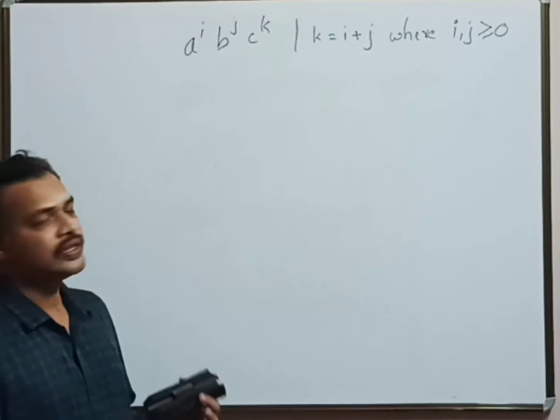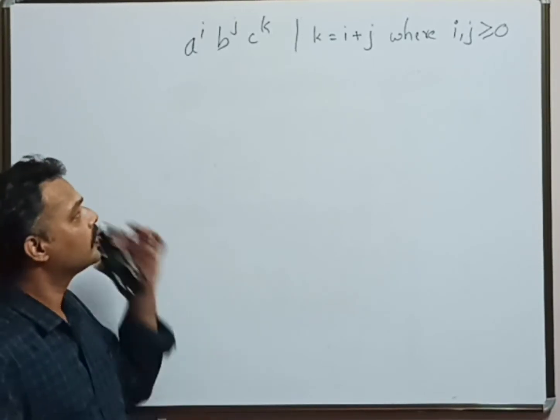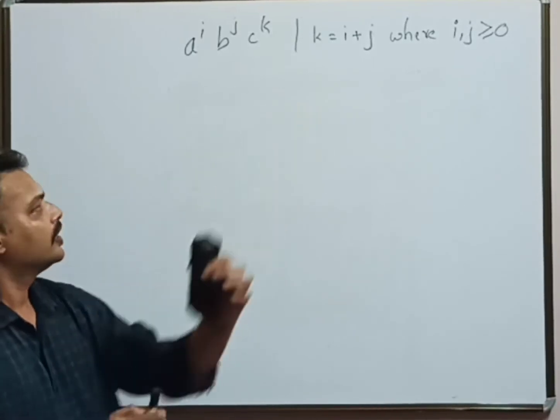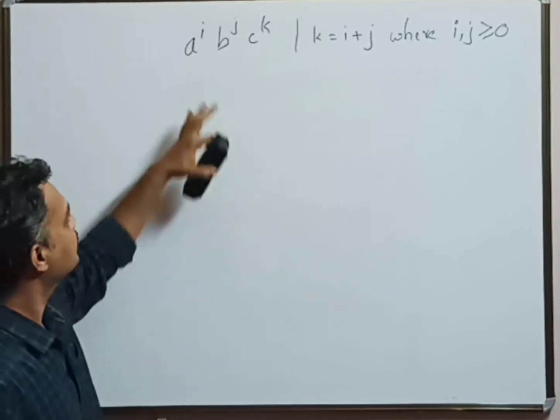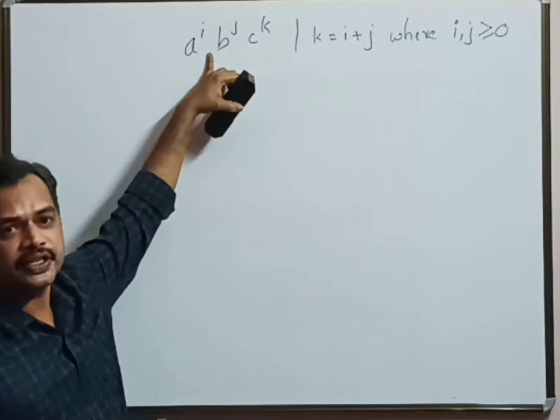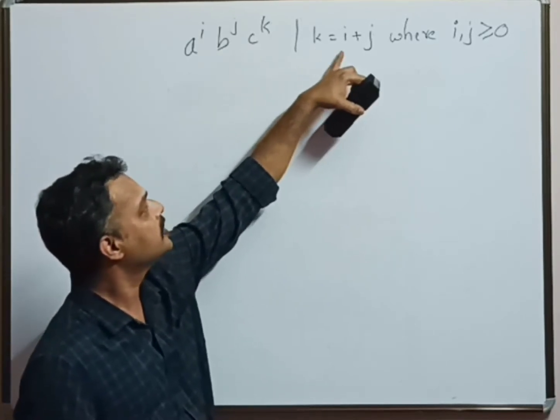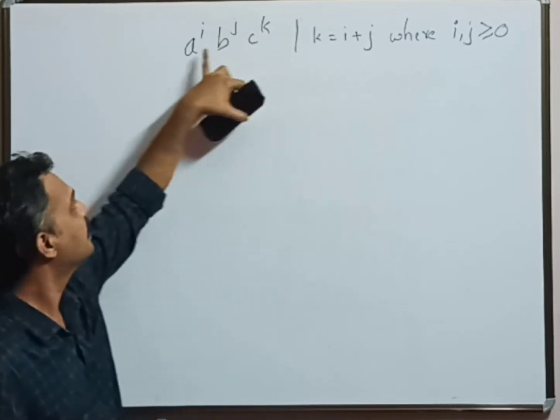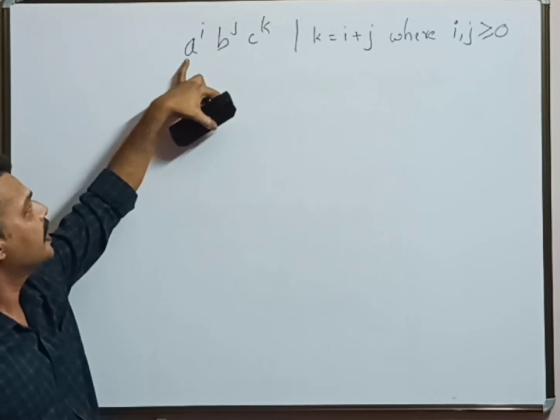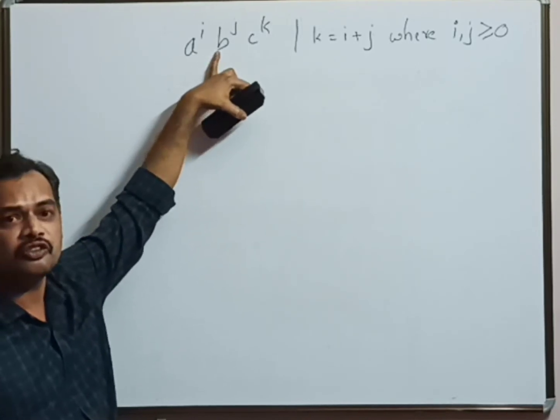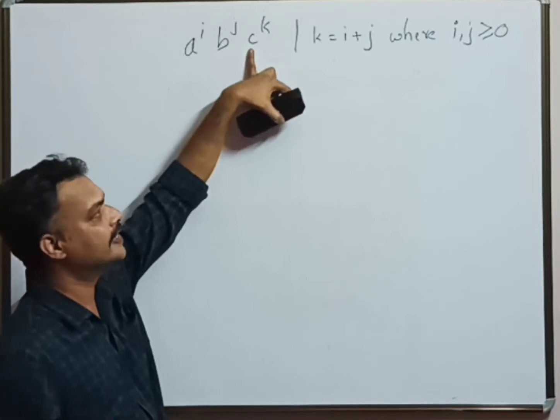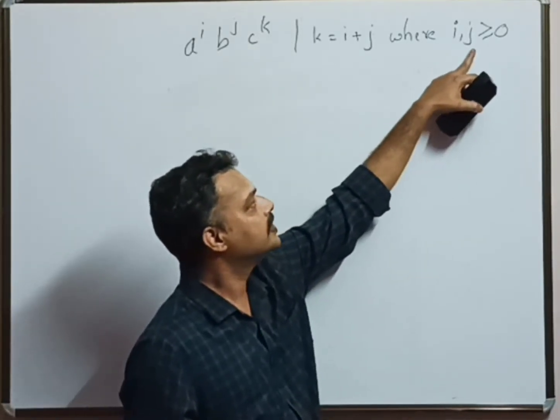This is a typical problem for which we are going to construct a CFG. The proper definition says a^i b^j c^k, where k equals i plus j. That means the number of occurrences of a plus the number of occurrences of b will equal the number of occurrences of c, and i and j can be zero or greater than zero.